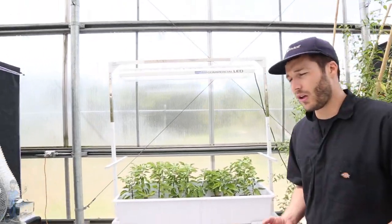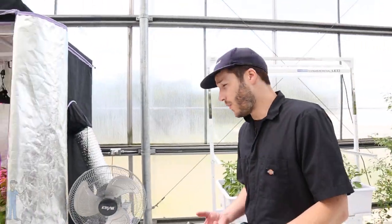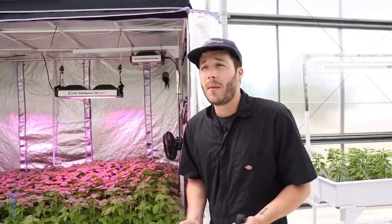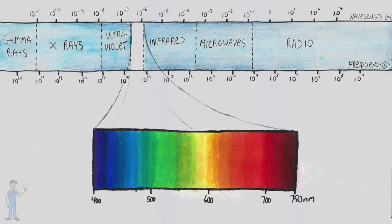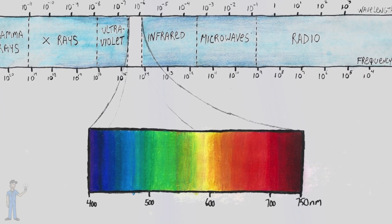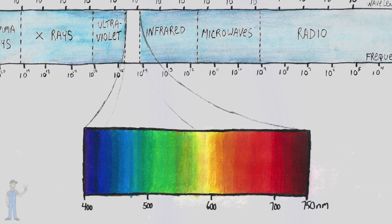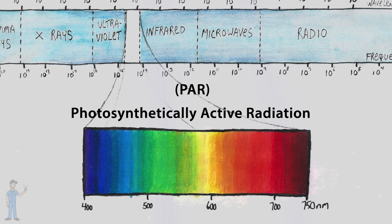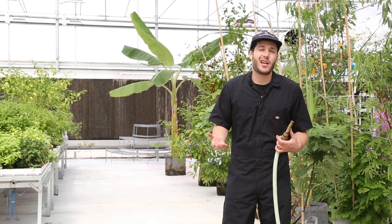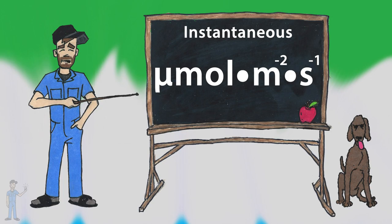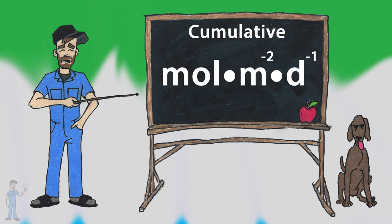Light quantity, or light intensity, is measured in a lot of different ways, but in horticulture we're usually focused on light that falls in a specific range of about 400 to 700 nanometers. This is called the PAR range, or photosynthetically active radiation. Light in the PAR range is usually measured in two ways: instantaneous, measured in micromoles per meter squared per second, or cumulative, measured in moles per meter squared per day.